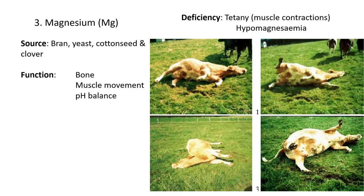Moving on to magnesium, symbol Mg. A good source of magnesium is bran feeds, yeast, cottonseed, and clover. With the sources, I'd say memorize maybe one or two of them — they rarely ask for more than two.